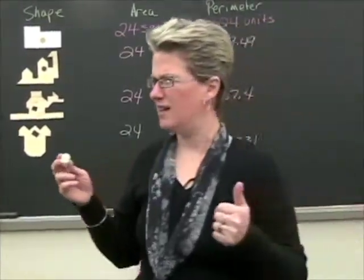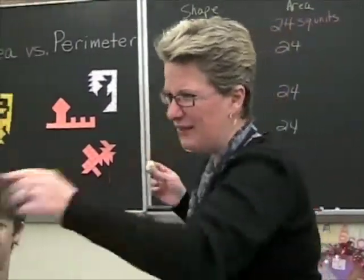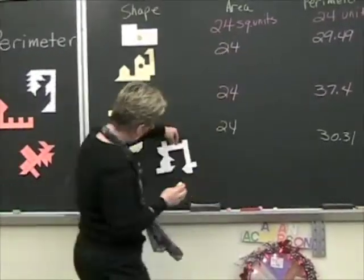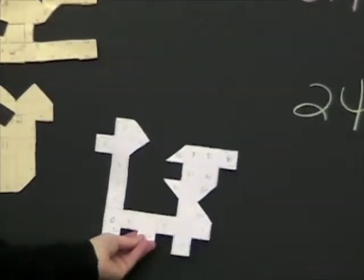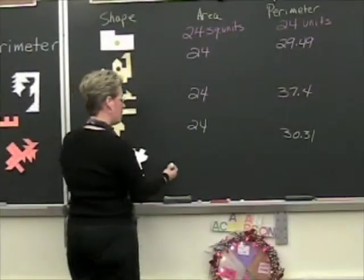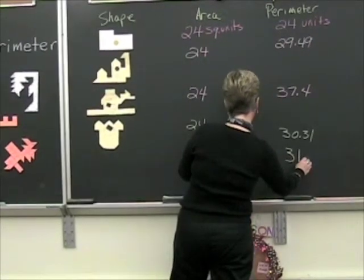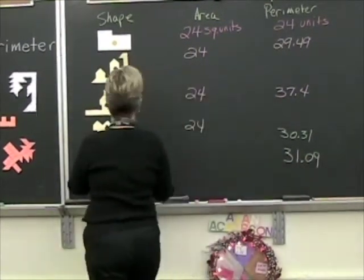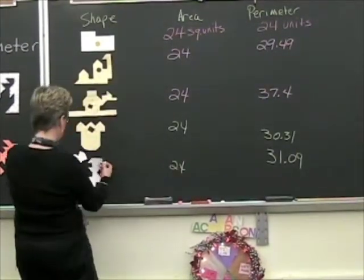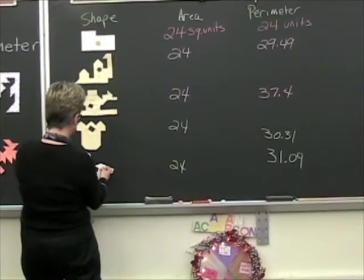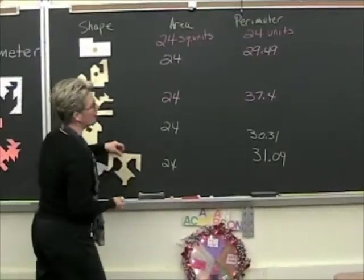Here's another good one — looks like the worst uncle. The perimeter on this one is approximately 31.09, and of course the area is 24.